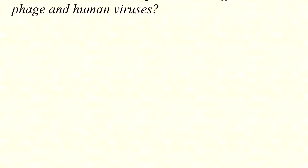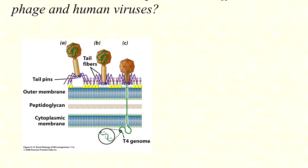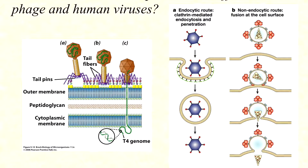How do attachment and penetration differ between phage and human viruses? With phage, attachment and penetration takes place through interaction between tail fibers, and then just the DNA is injected all the way across — through an outer membrane, peptidoglycan, and cytoplasmic membrane in gram-negative bacteria. The capsid remains empty on the outside of the cell.